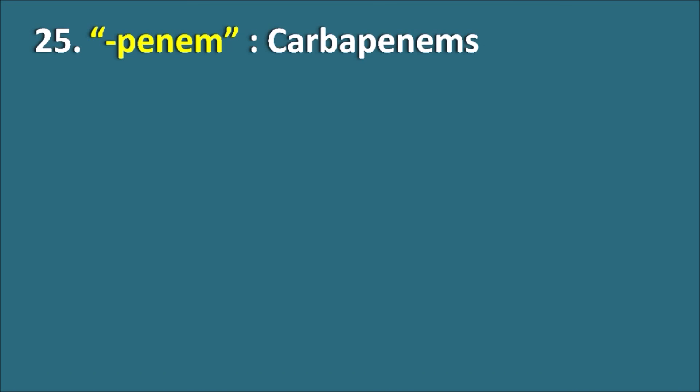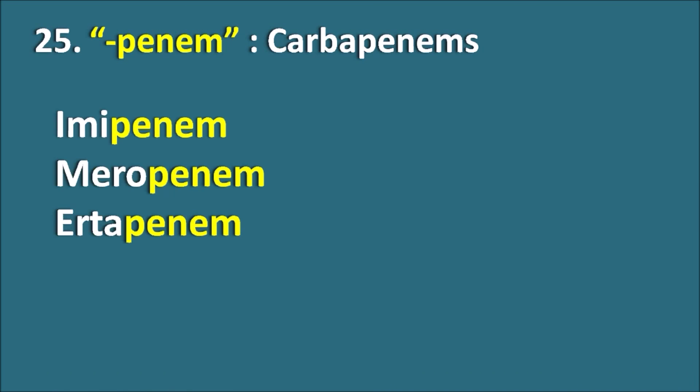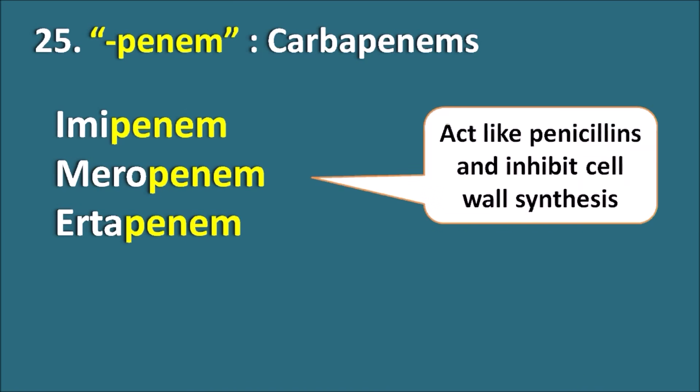Twenty-fifth, the suffix '-penem' indicates they are carbapenems. Drugs like Imipenem, Meropenem, and Ertapenem are all carbapenems. These drugs act like penicillin and inhibit cell wall synthesis, but are not easily hydrolyzed by the enzyme penicillinase. So they have advantages in treating both gram-positive and gram-negative infections.